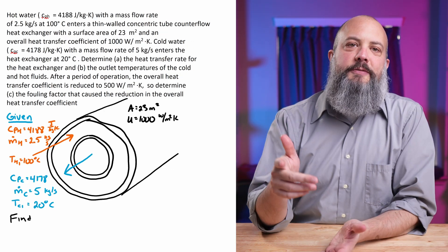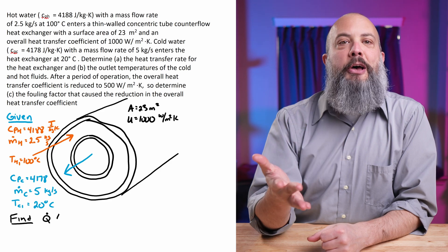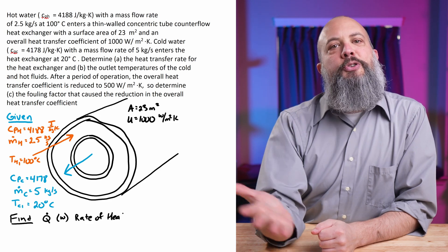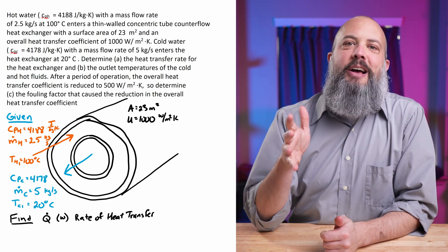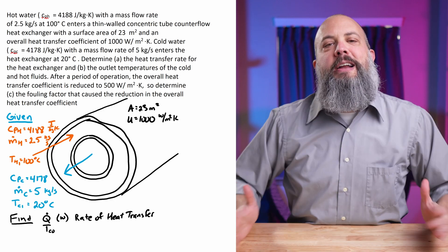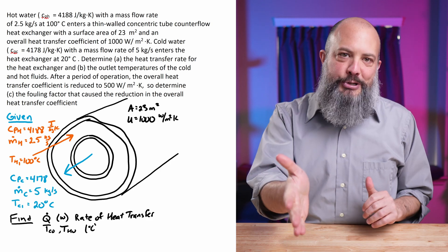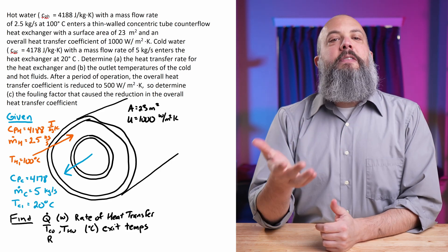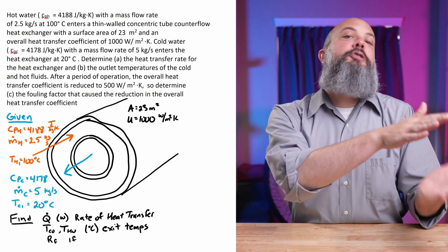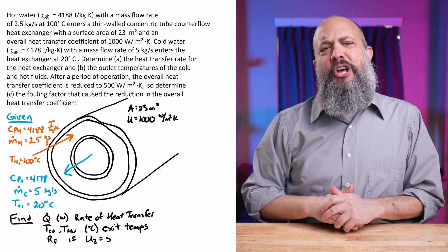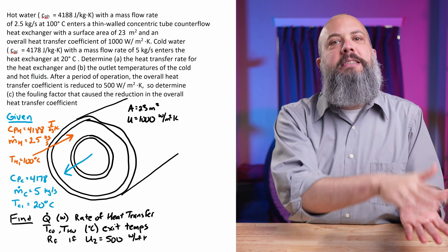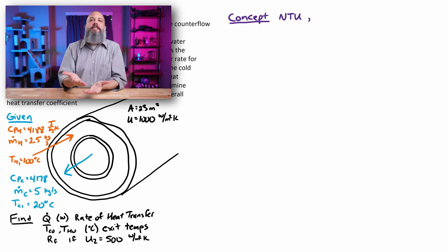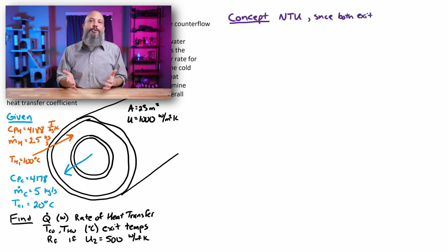For this example problem, we've got mass flow rates, inlet temperatures, and specific heat values for both the hot flow and the cold flow, which are flowing in opposite directions. We've also got the overall heat transfer coefficient U and the surface area. We're trying to find the rate of heat transfer, the exit temperatures for both flows, and as an added step, how much fouling would it take to drop the heat transfer coefficient from 1,000 to 500.